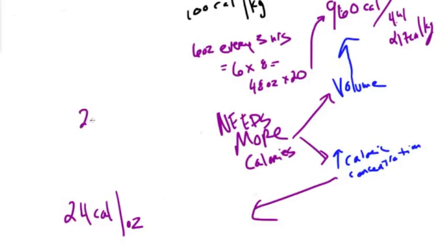If we want to concentrate the formula to 24 calories per ounce, then all you got to do is figure out how many ounces he takes in a day. So two ounces every three hours, that's eight feeds, that's 16 ounces total.